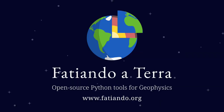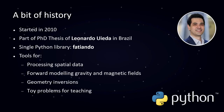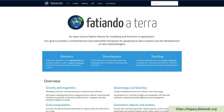Fatiando a Terra is a community-driven project with the goal of providing open source Python tools for geophysics that are well-documented, well-tested, and easy to use. It started in 2010 as part of the PhD thesis of Leonardo Uieda in Brazil, born as a single Python library called Fatiando a Terra that offered tools for processing spatial data, forward modeling gravity and magnetic fields, performing some geometry inversions, and toy problems useful for teaching. You can still visit it at legacy.fatiando.org.